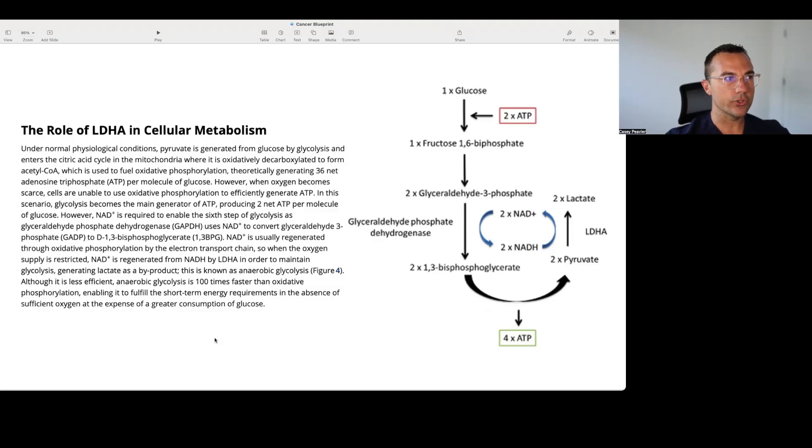NAD is usually generated through oxidative phosphorylation by the electron transport chain. So when the oxygen supply is restricted, NAD is regenerated from NADH by lactate dehydrogenase A in order to maintain glycolysis, generating lactate as the byproduct. This is known as anaerobic glycolysis. Although it is less efficient, anaerobic glycolysis is 100 times faster than oxphos or oxidative phosphorylation, enabling it to fulfill the short-term energy requirements in the absence of sufficient oxygen at the expense of a greater consumption of glucose.